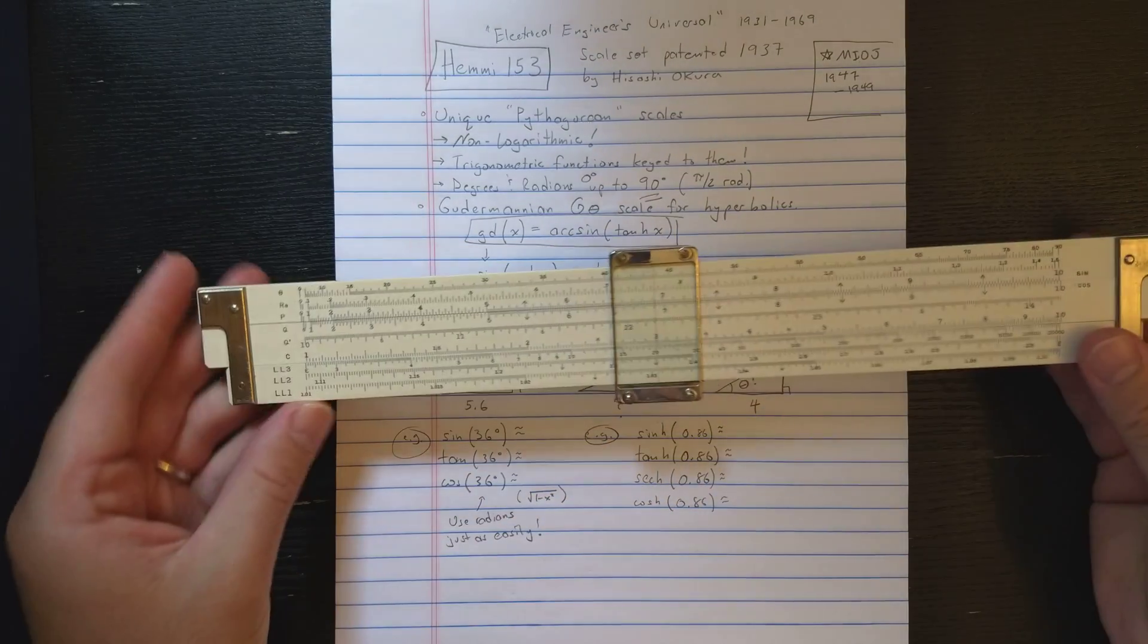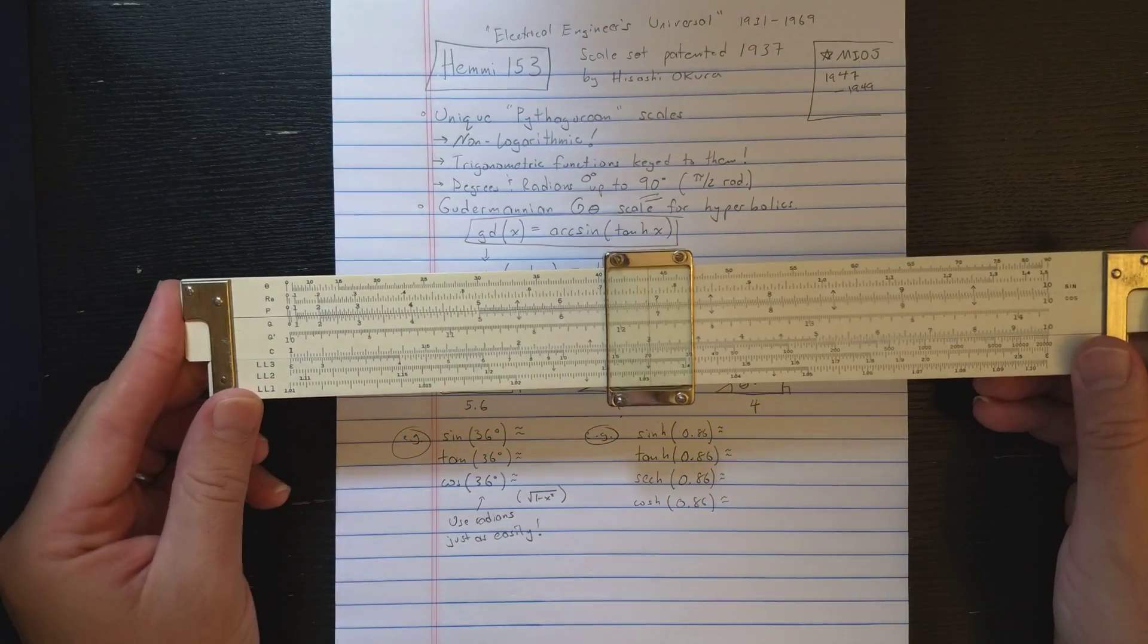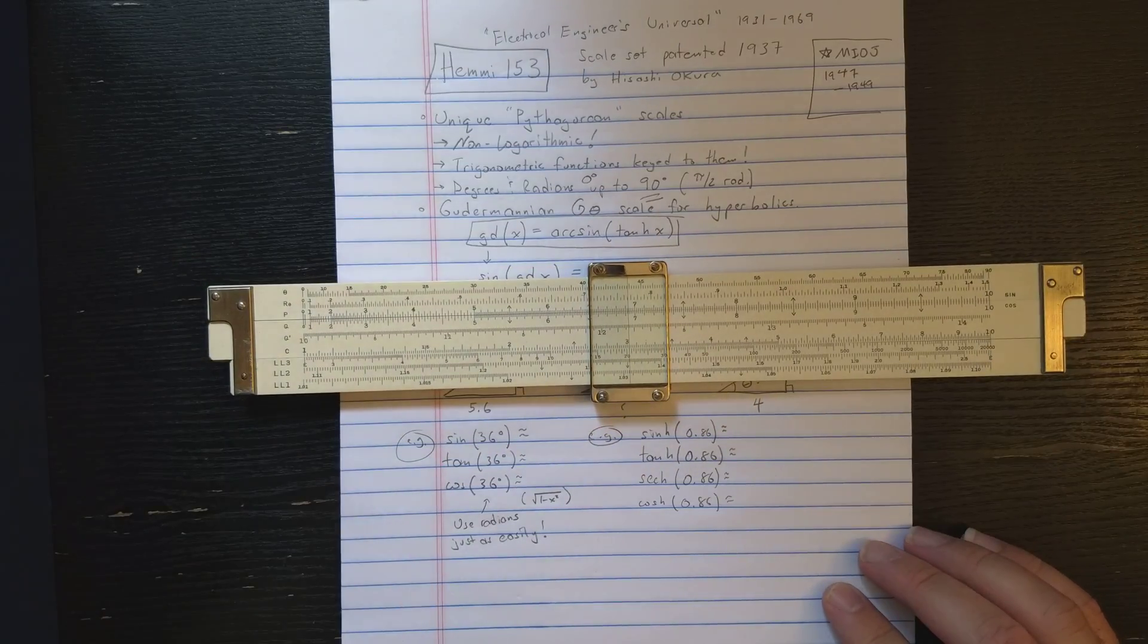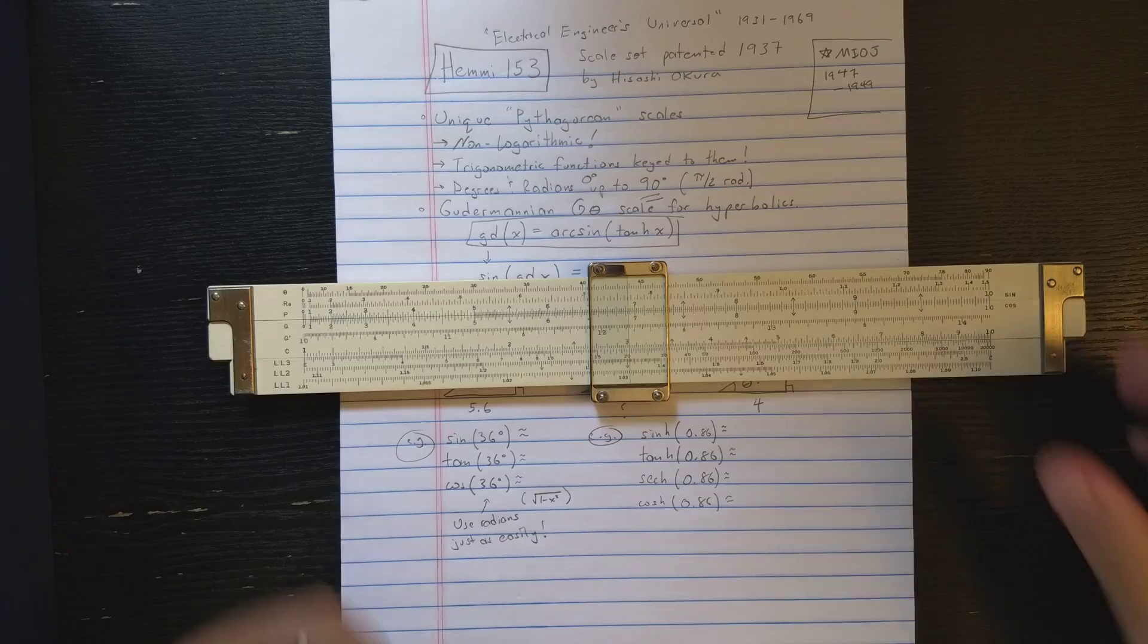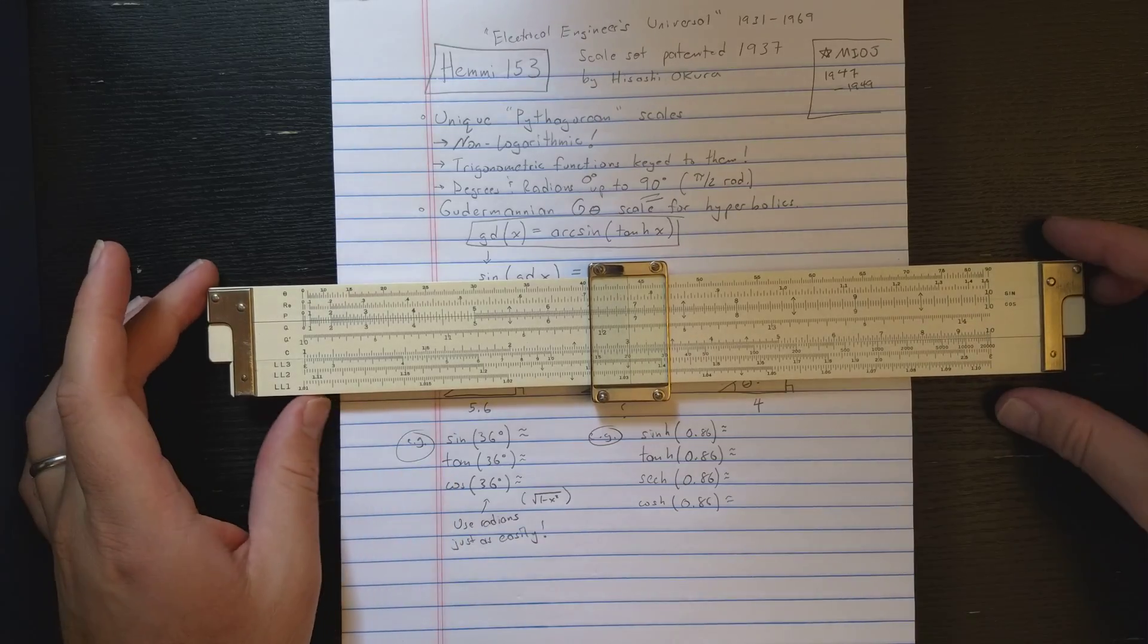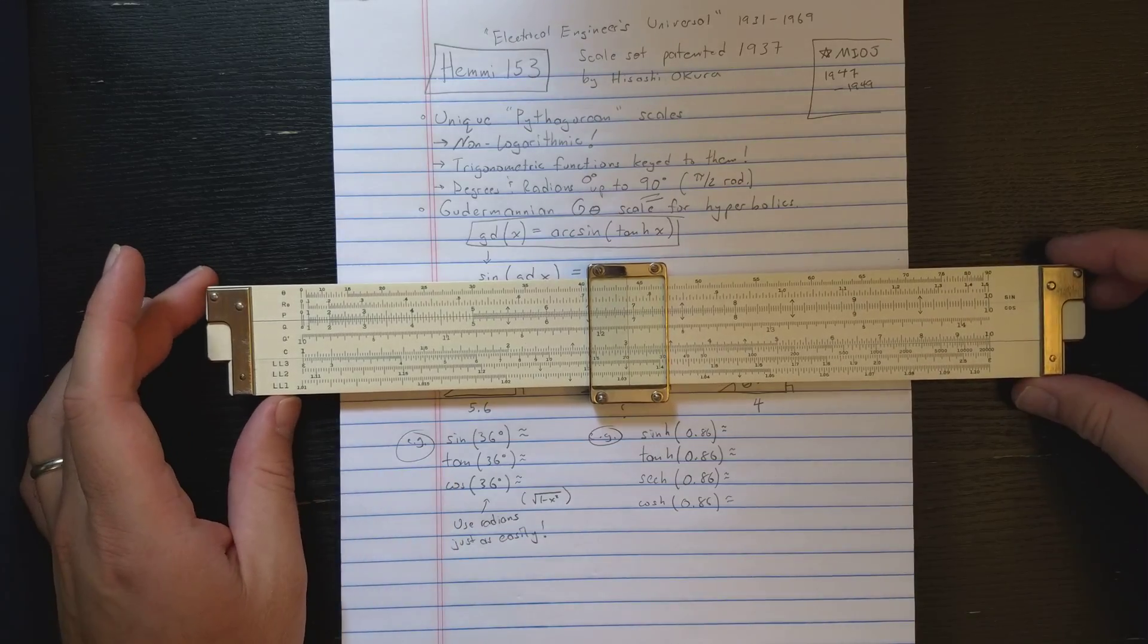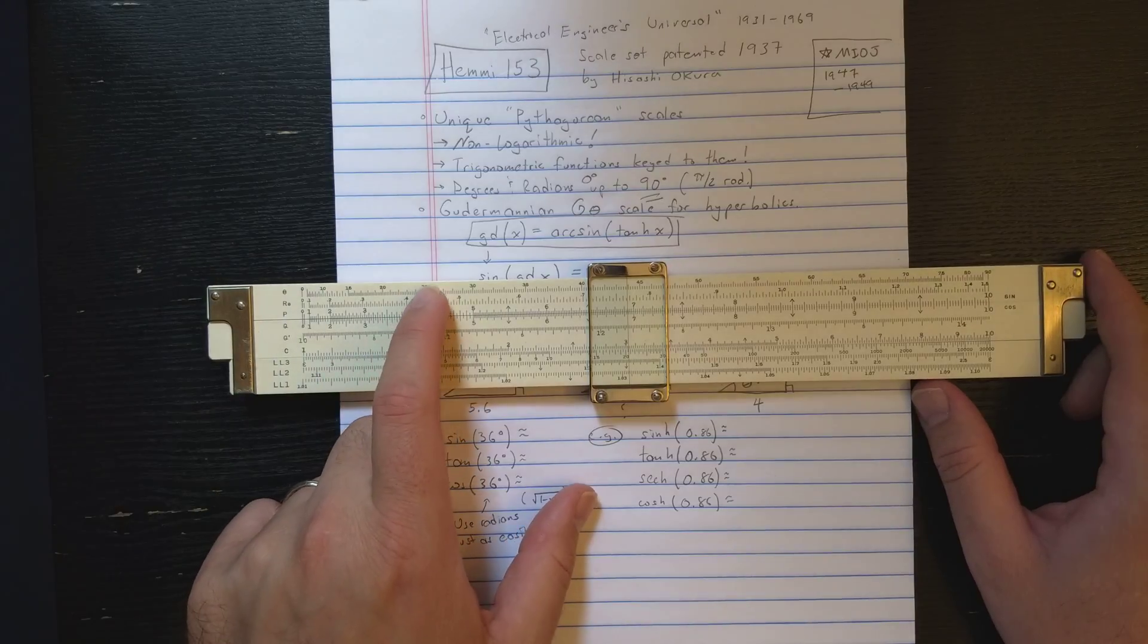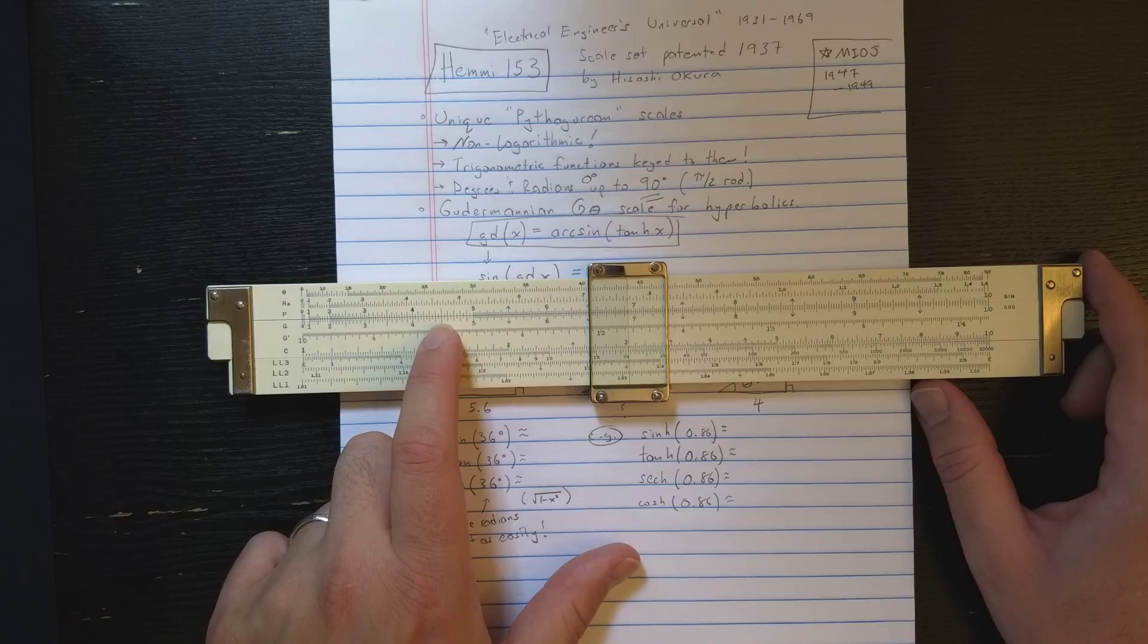So the P, Q, and Q' scales are for solving triangles. They're kind of a replacement for the Pythagorean scales you see on other slide rolls, but they're not the same scale.